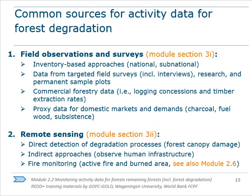Remote sensing can be applied to directly infer where degradation is occurring by detecting disturbances in canopy cover over time. Alternatively, remote sensing could be used to indirectly infer degradation through proximity to human infrastructure, because these two variables have been shown to have a very direct correlation. Remote sensing may be the most practical approach to quantifying fires, but that is discussed a lot more in Module 2.6, so I'll direct you to review that module.